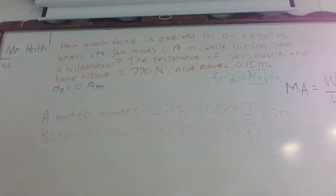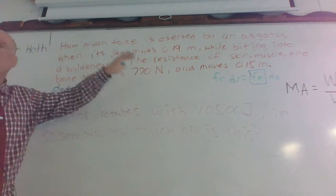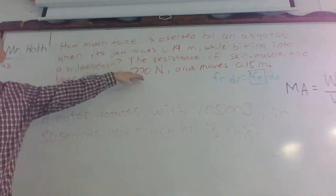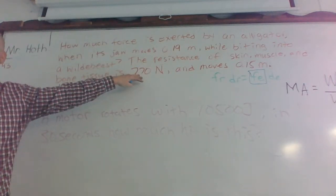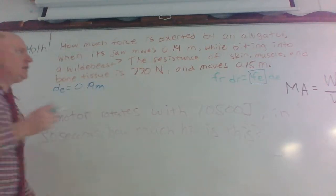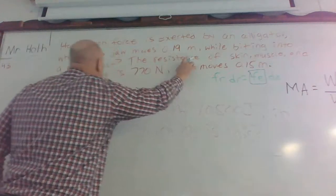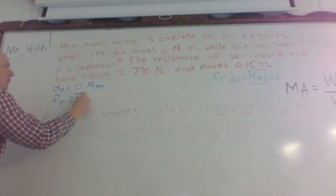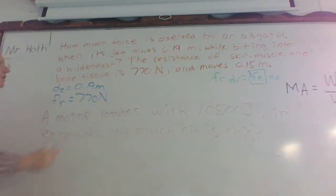So DE equals 0.19 meters, okay. Then, next, it says, the resistance of skin, muscle, and bone tissue is 770 newtons. So we know that newtons is a force. So which force do we have here? Resistance, because it says that right here. So the resistance force equals 770 newtons, okay.